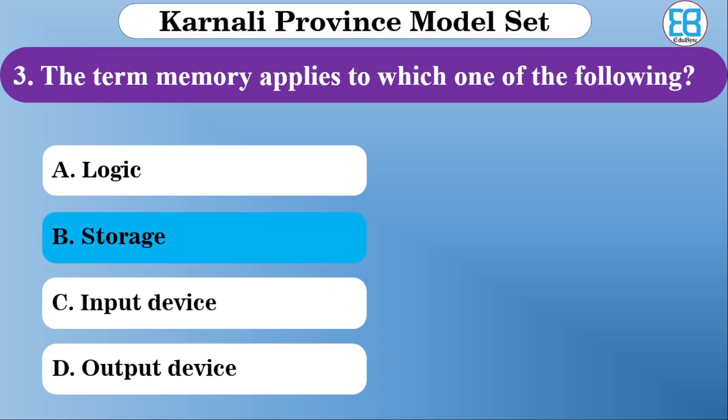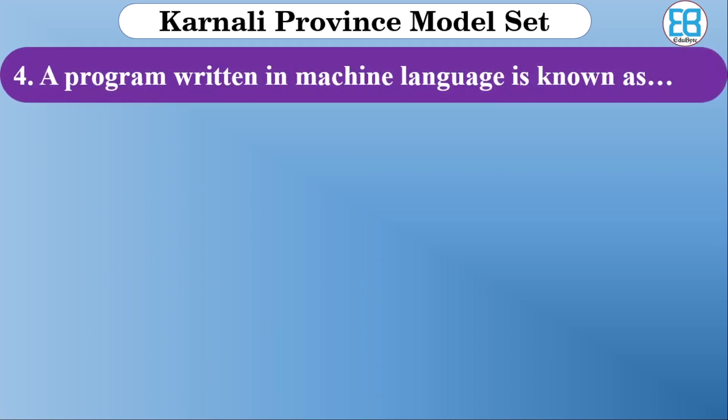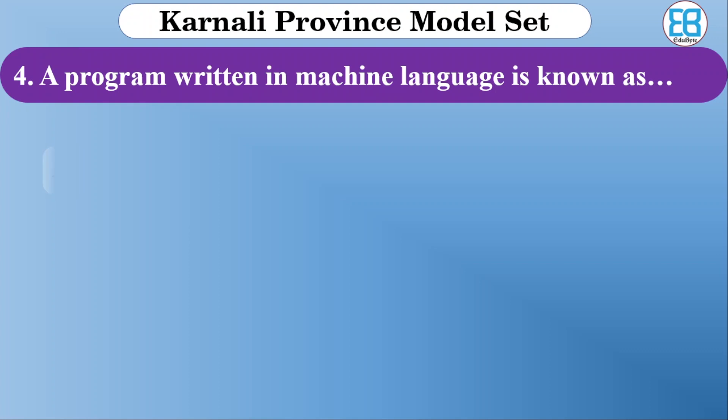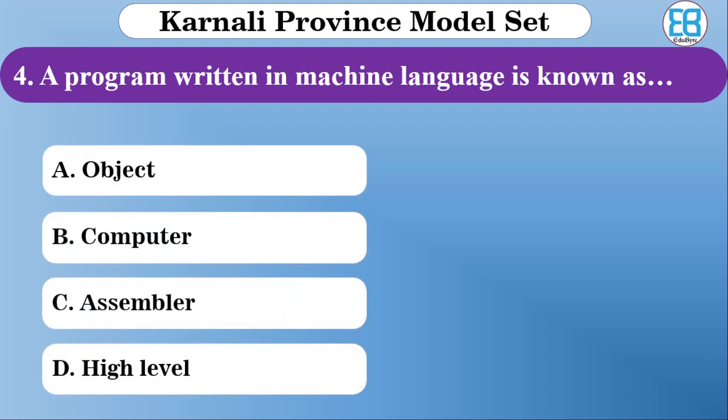The correct option is storage. Memory applies to storage. Next: a program written in machine language is known as what? The options are object program, computer assembly, and high-level. The correct option is object program.